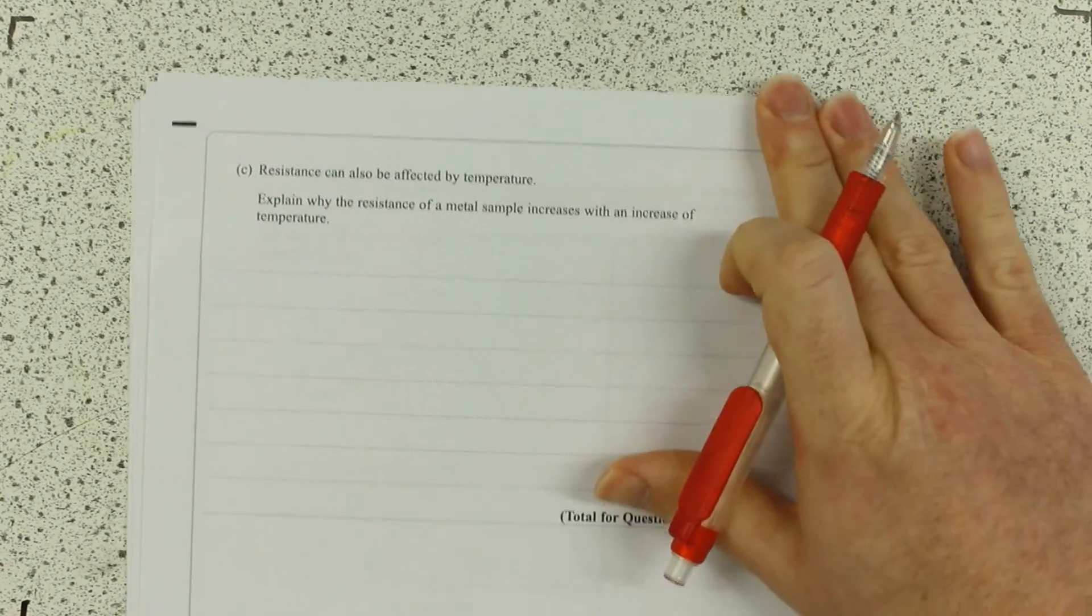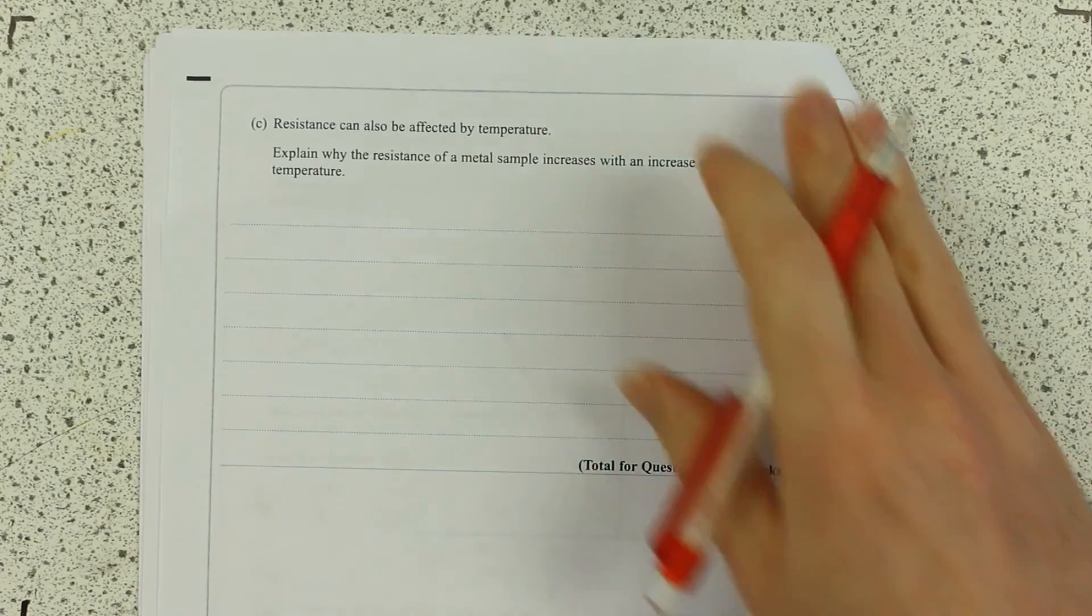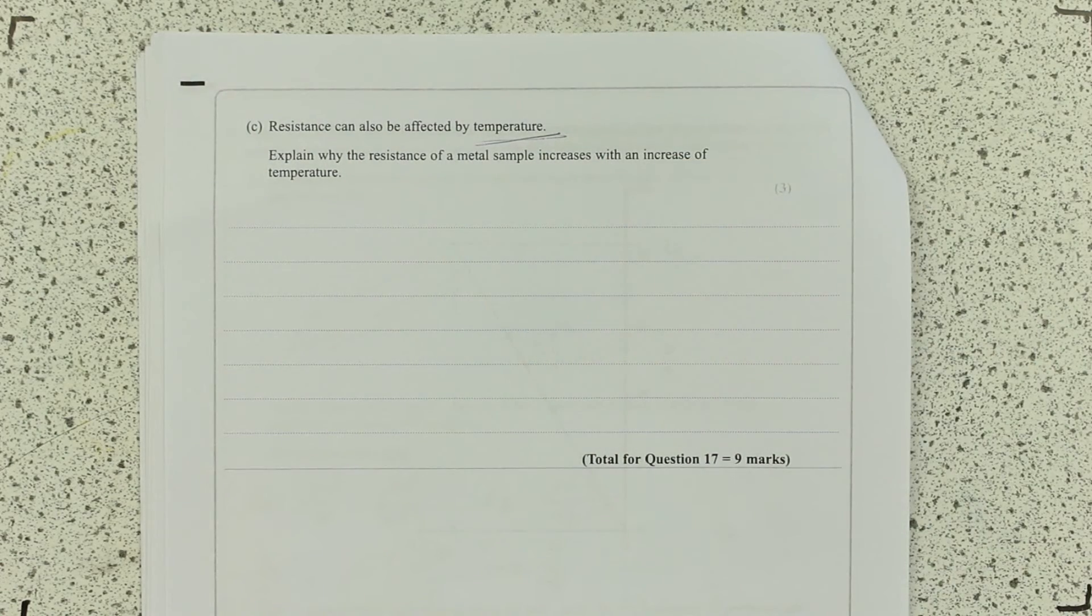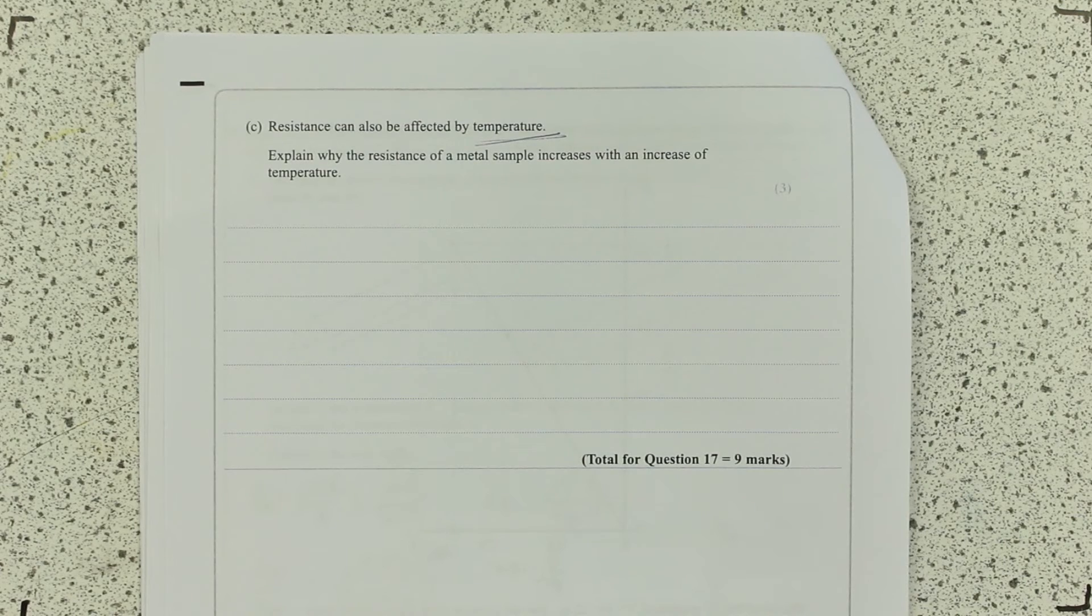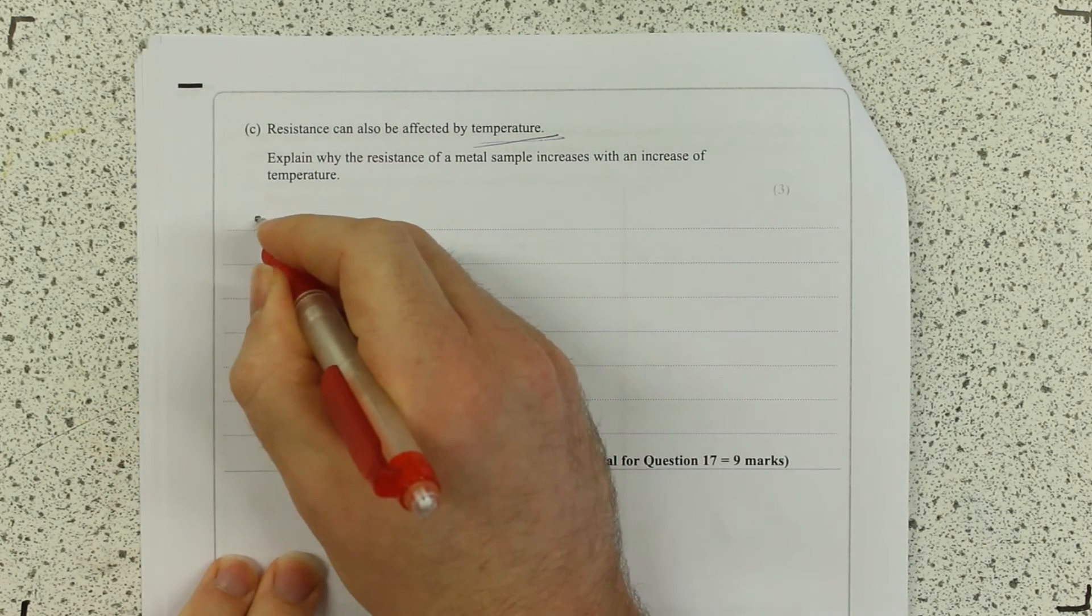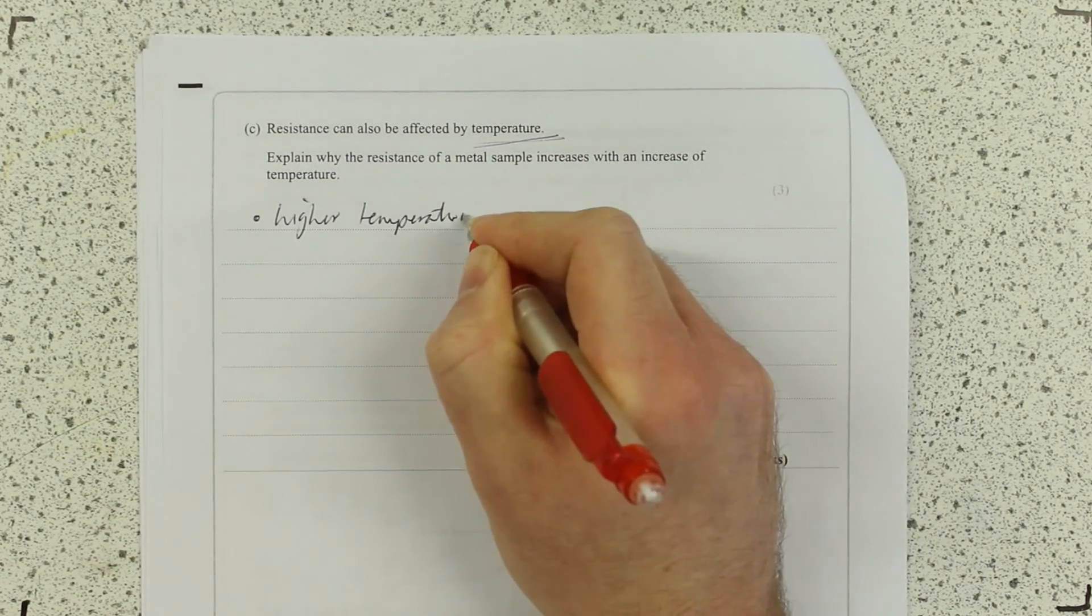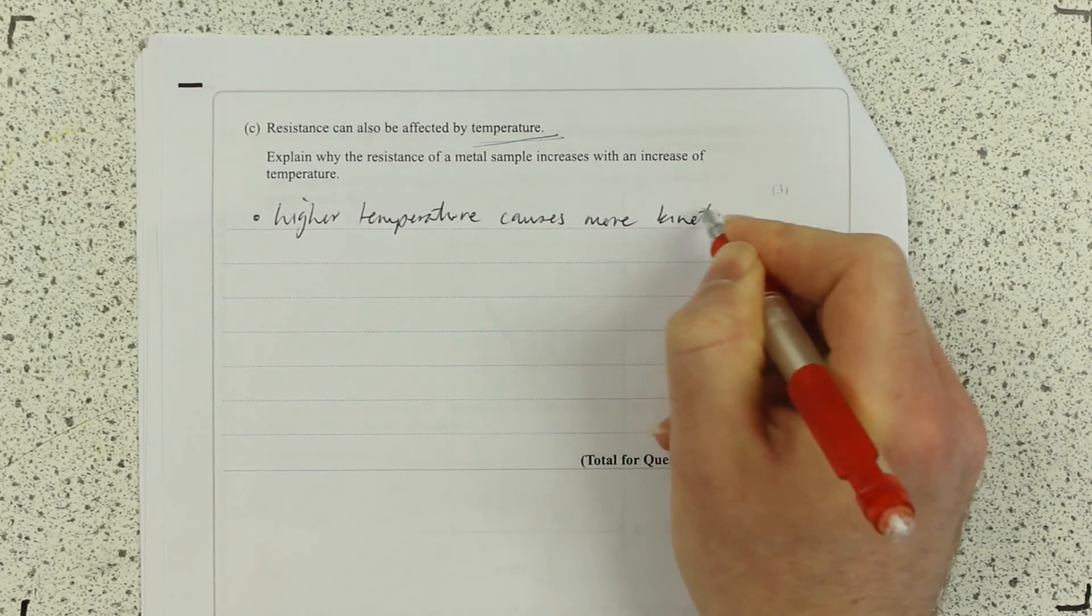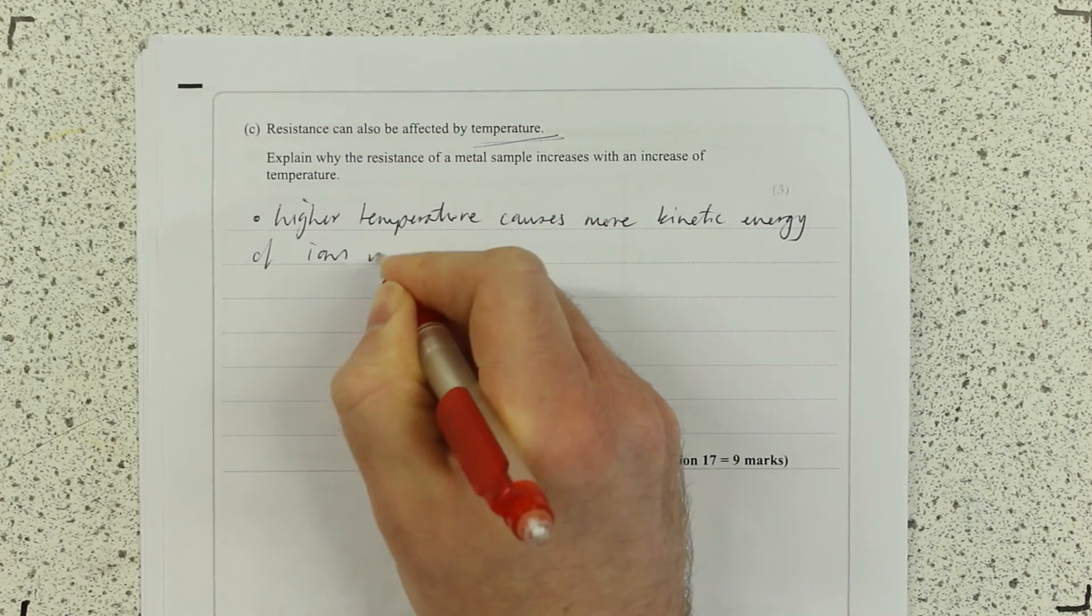Last one then. Nice and easy. Resistance can also be affected by temperature. This, again, pretty much is just going to be drawing on our GCSE. Resistance could be affected by temperature. Remember all the stuff about filament bulbs? Why? The resistance of a metal sample increases with an increase of temperature. So unless it's an NTC thermistor, what happens when you increase temperature?